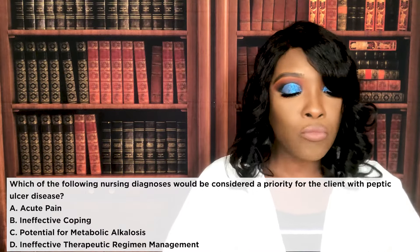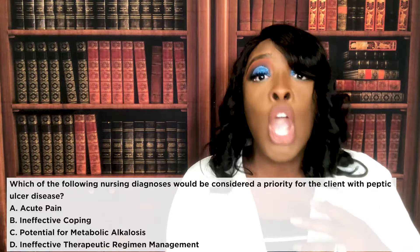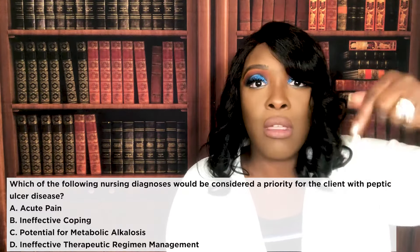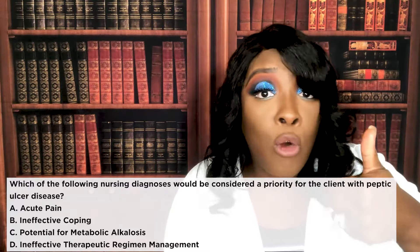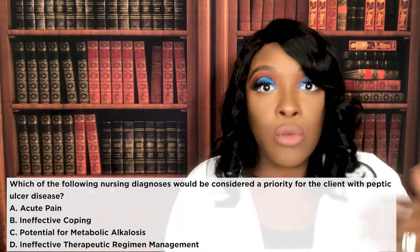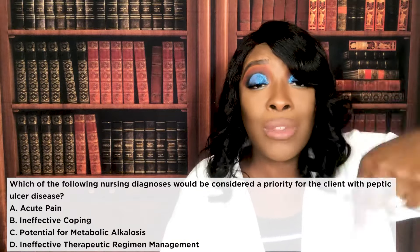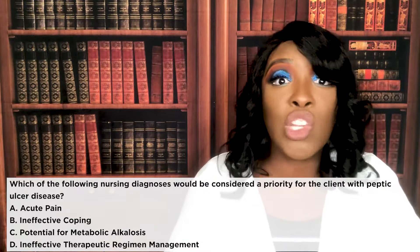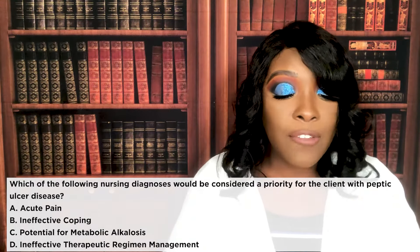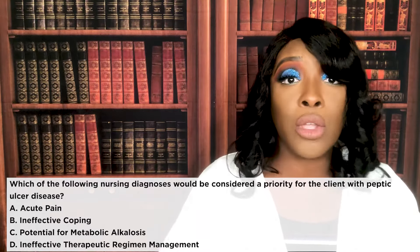Choice C — potential for metabolic alkalosis — is wrong because in a priority question, you always choose something happening with the patient right now, never a 'potential' or 'risk for,' unless all choices are potential. Choice D — ineffective therapeutic regimen management — is wrong because nothing in the question tells us the patient isn't taking their medications as prescribed. That's what makes A the correct answer.